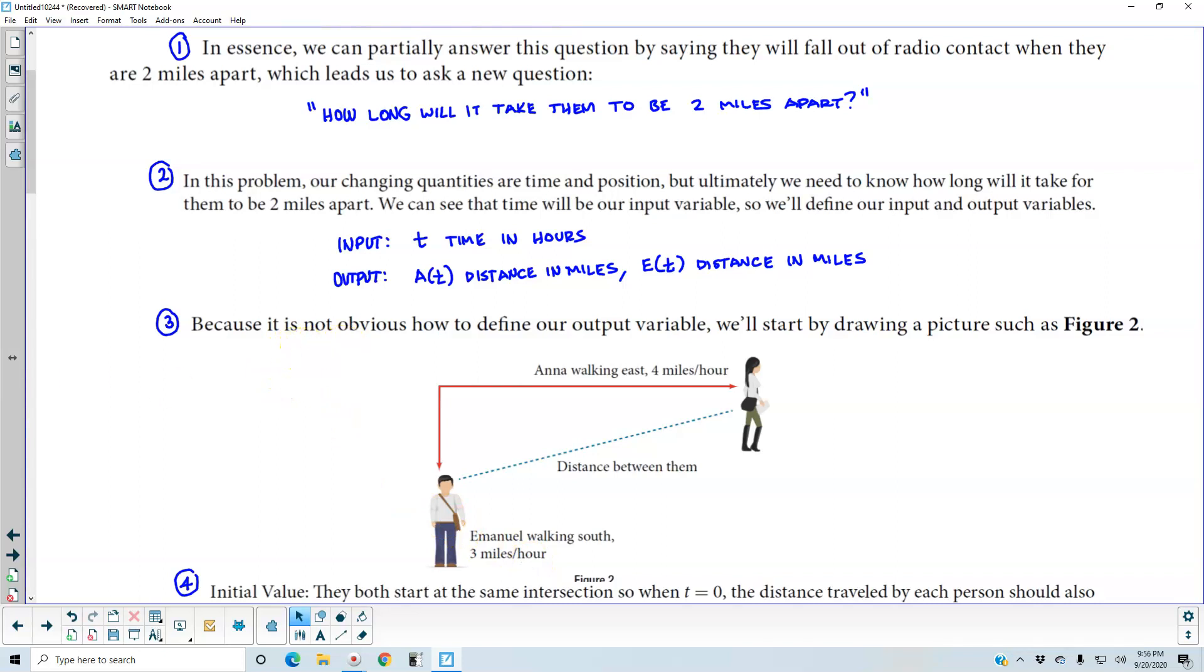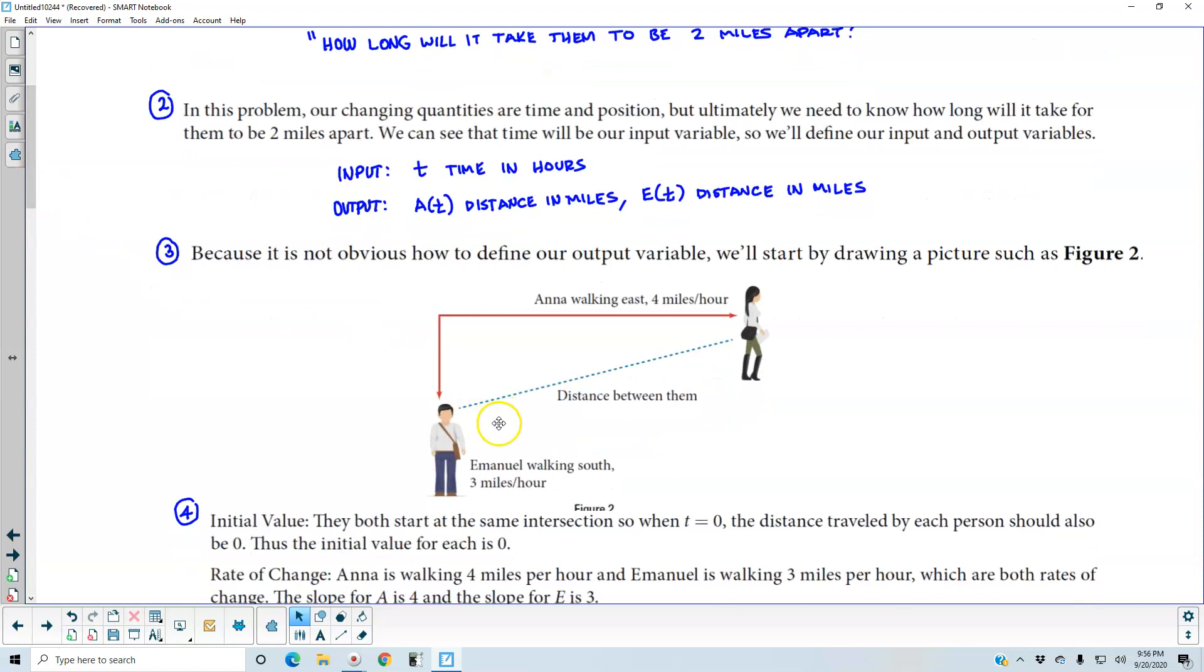Now in step 3, because it is not obvious how to define our output variable, we'll start by drawing a picture such as you see in Figure 2. So here is Emanuel walking south. He walks south 3 miles per hour.